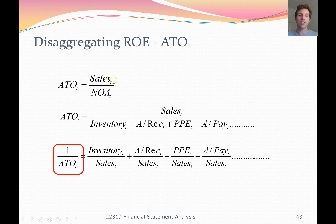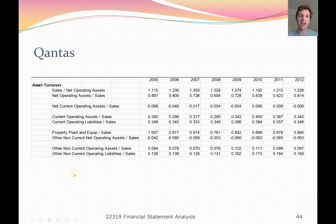When you do the asset turnover ratio as sales divided by average NOA and break it down on an individual asset item — for example, sales divided by inventory — it can be easier to flip it around and do the inverse (inventory over sales), as it's a little bit easier to actually analyze. Looking at Qantas, their sales over net operating assets — the overall asset turnover ratio — was up to 1.2 by 2012, meaning their whole asset base was generating about 20% more than that in sales each year. We can then break it down further into property, plant and equipment, accounts receivable, payables, and all the different levels.